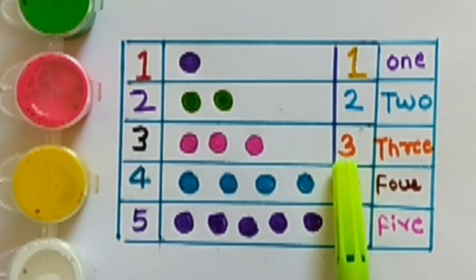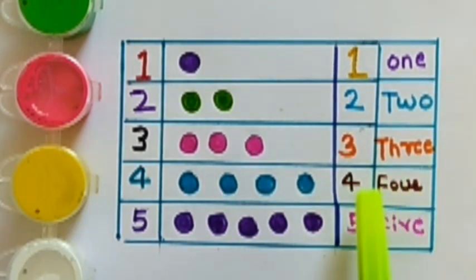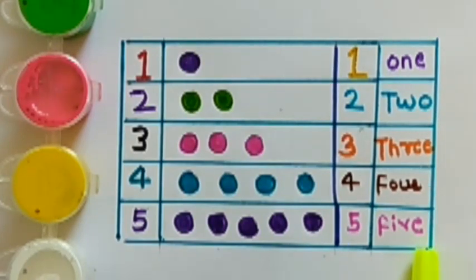1 o n e 1, 2 t w o 2, 3 t h r double e 3, 4 f o u r 4, 5 f i v e 5.